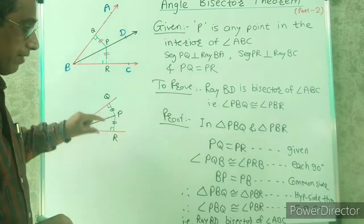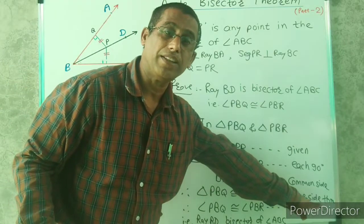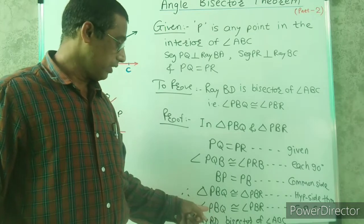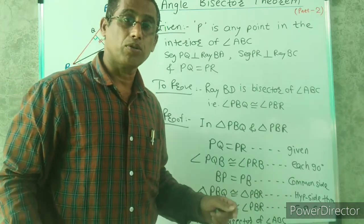If the two triangles are congruent then their corresponding angles are also congruent.